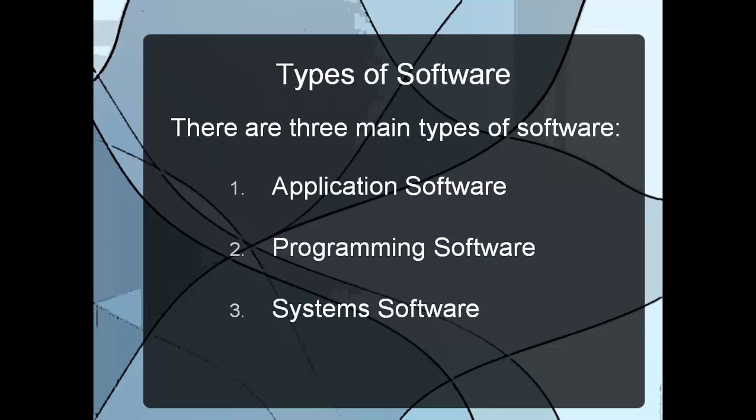Welcome to today's lesson on computer software. Today we're going to be looking at the three general categorizations of software: applications, programming software, and system software.